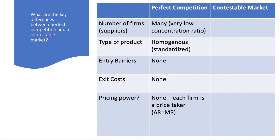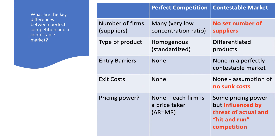A contestable market is different, and it's really quite important you understand some of the differences. There is no set number of suppliers — you could have just a few firms, or even one firm in the contestable market, which sounds slightly counterintuitive. The key is whether there is actual and potential competition in the market, so any number of firms can operate. Crucially, each firm is likely to be selling differentiated or heterogeneous products, with subtle differences in quality, design, and performance — that's a key part of competition as you try to enter the market and differentiate yourself from your competitors.